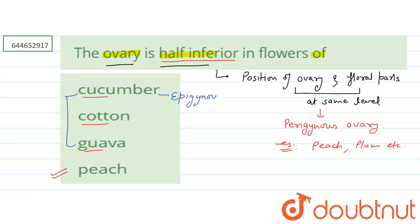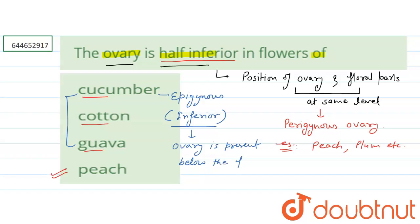Cucumber and guava have an epigynous type of ovary, which means an inferior ovary. This means the ovary is located below the floral parts.